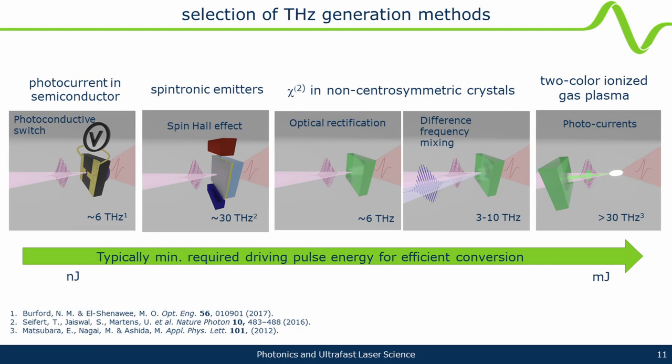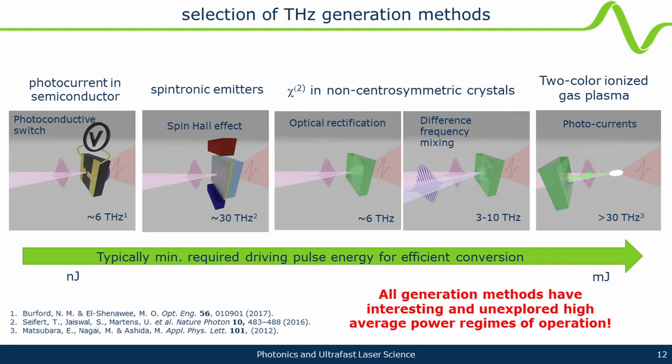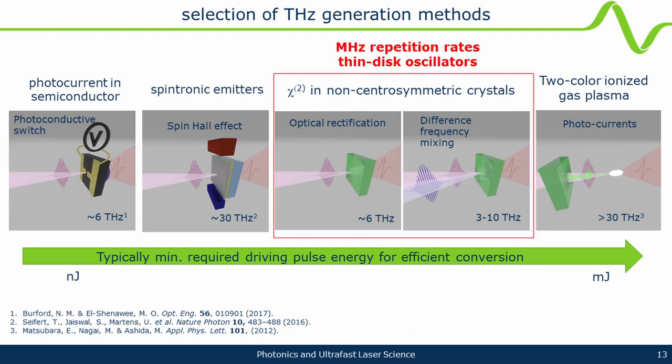When we started, we thought about how to take these oscillators to terahertz. We looked at all available techniques and started with GaP materials, simply because they are commercially available. We were new to the community and thought it was a good way to start — we had a decent amount of pulse energy and very high repetition rate compared to typical people doing optical rectification.